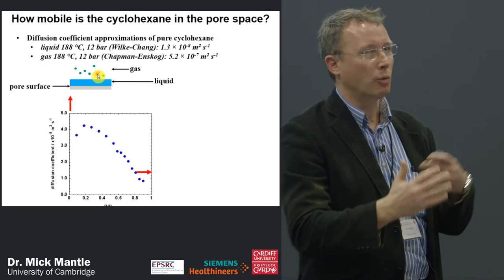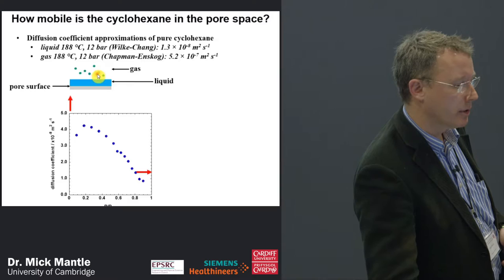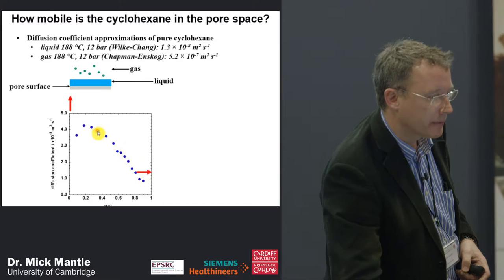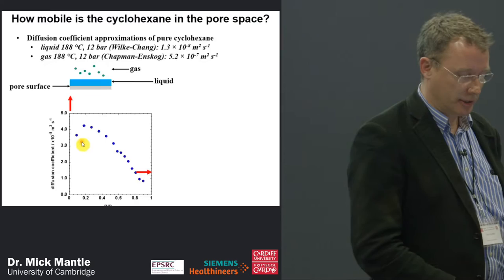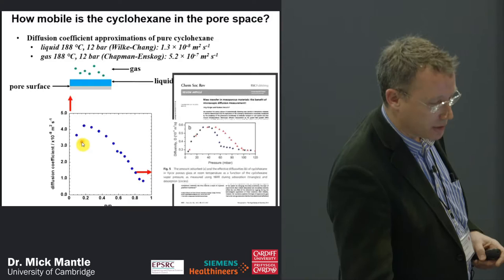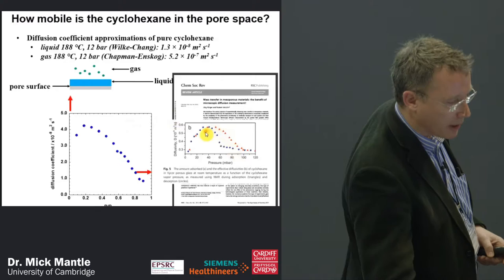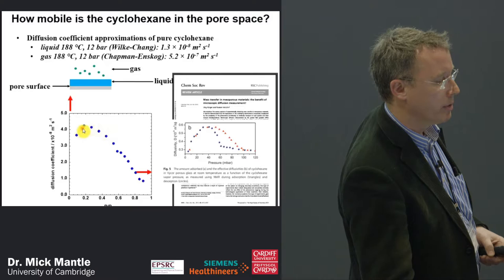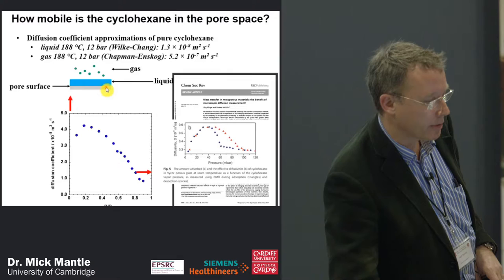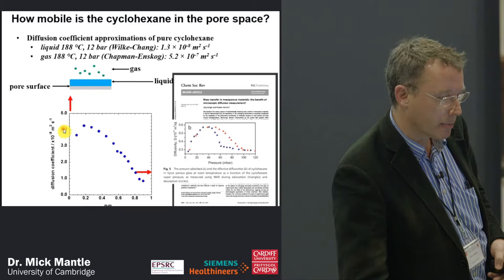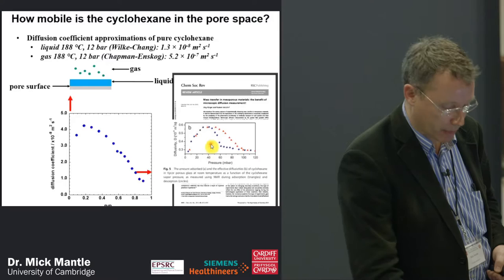There is a single turnover point where diffusion decreases at low saturation — not an error, as confirmed by checking the data and the literature, including work by Kärger. At low pressures we lose the gas phase and move into a single monolayer of liquid diffusing along the surface: surface diffusion, which is much slower. It's nice to see the same behaviour at high temperatures and high pressures as observed at sub-ambient conditions.